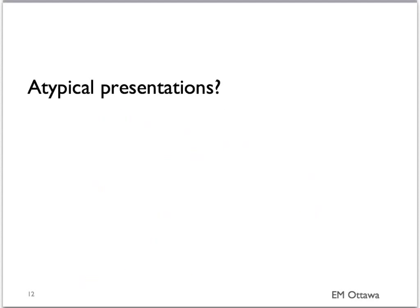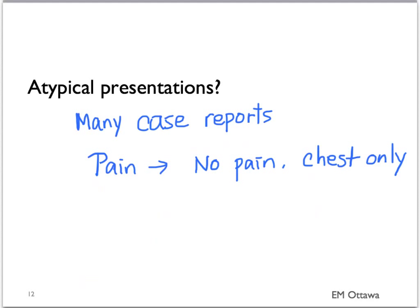What about atypical presentations? The literature is rich with atypical cases for aortic dissection. They're atypical in that either their pain is not typical or the end organ effects are transient or limited. This has made aortic dissection very difficult to diagnose in the emergency department.